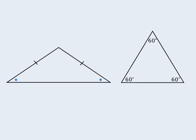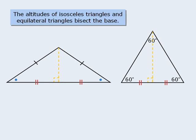Before we end this session, I want to examine one last feature of isosceles triangles and equilateral triangles. For the isosceles triangle: if we begin where the two equal sides intersect and draw a perpendicular line to the opposite side, then the perpendicular line will split the opposite side into two equal lengths. If we do the same thing with an equilateral triangle, the perpendicular line will also split the opposite side into two equal lengths. Since these perpendicular lines are the altitudes of the two triangles, we can say that the altitudes of isosceles triangles and equilateral triangles always bisect the base.